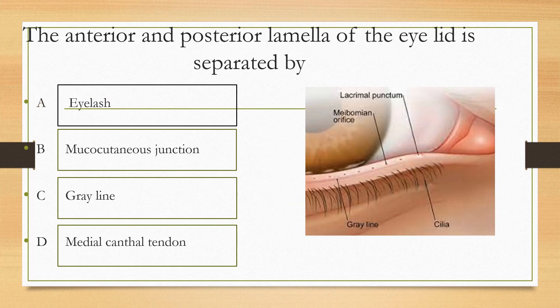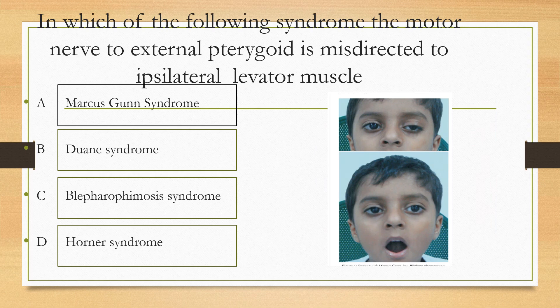The anterior and posterior lamella of the eyelid is separated by which anatomical landmark? Options are: option A eyelash, option B mucocutaneous junction, option C gray line, option D medial canthal tendon. The answer is the gray line.